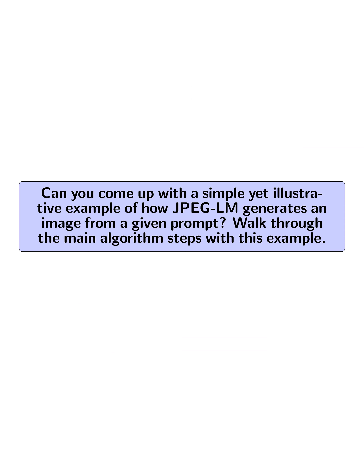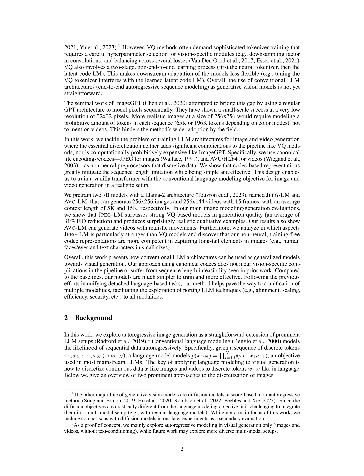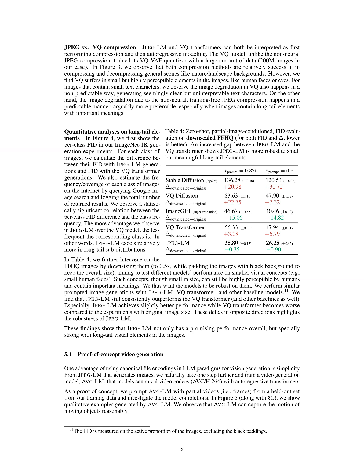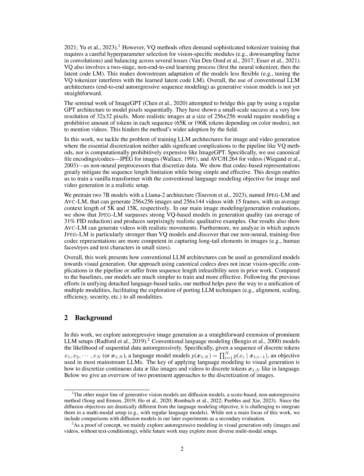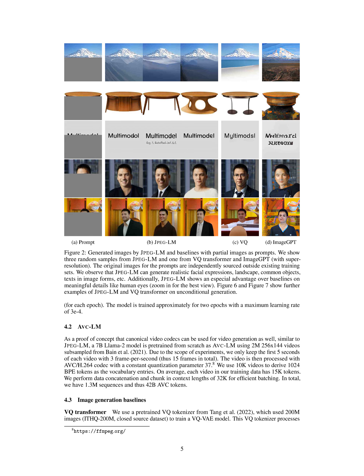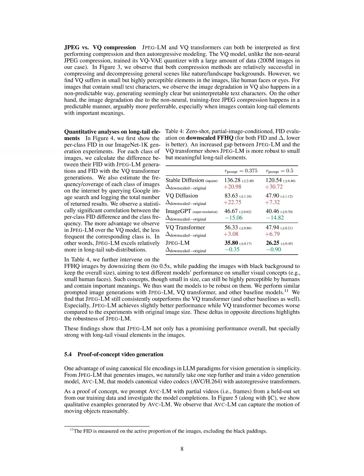Can you come up with a simple yet illustrative example of how JPEG-LM generates an image from a given prompt? JPEG-LM generates an image by modeling the probability of JPEG tokens given a sequence of previously generated tokens. For example, if the prompt is a partial image of a landscape, JPEG-LM first processes this input to extract JPEG tokens representing the image in compressed format. The model then uses its autoregressive architecture to predict the next token iteratively, sampling and appending new tokens until the entire image is reconstructed, then decoding the token sequence back into a complete visual image.